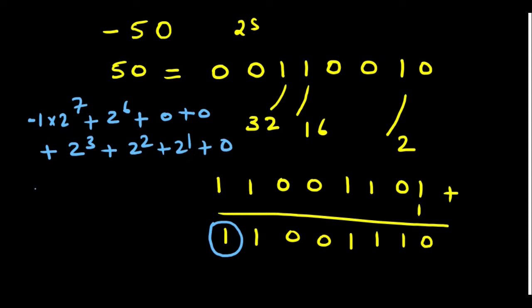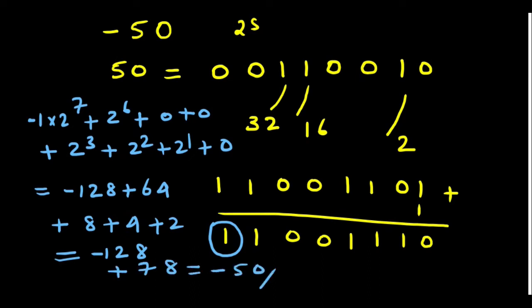Now if we add what you get, minus 1 multiplied by 2 to the power 7, that is minus 128 plus 64 plus 8 plus 4 plus 2. If we add all this, what do you get? 64 plus 8, 72, 72 plus 4, 76 plus 2, 78. So minus 128 plus 78, what do you get? You get minus 50. So whatever we have done, that is right.